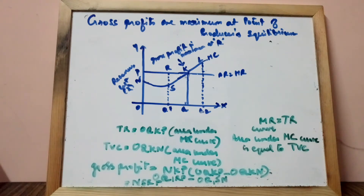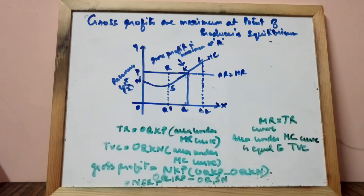According to the TR-TC approach, producer's equilibrium is determined when the difference between TR and TC is maximum, or the difference between TR and TVC is maximized. Hence, producer's equilibrium refers to that level of output when gross profits are maximized.